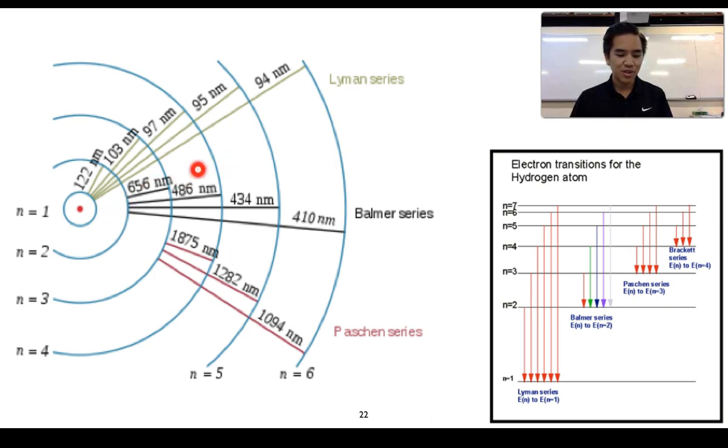We've got other series which are called the Lyman series which its energy transitions correspond to higher energy or shorter wavelength ultraviolet radiation and the Paschen series which is longer wavelength lower energy infrared.